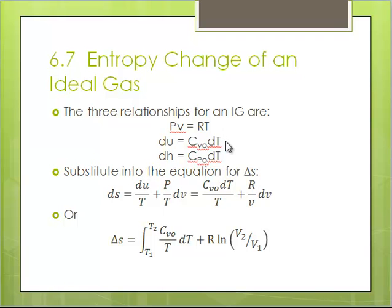Also I can say DU is CV₀dT, the little subscript zero there additionally indicating that it's for an ideal gas. And DH is CP₀dT, again that subscript zero to indicate that it's for an ideal gas.